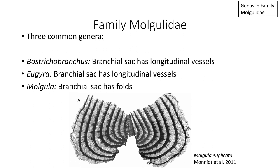In the Family Mogulidae, there are three common genera: Bostrichobranchus, Eugyra, and Mogula. The way to tell the difference is to start with understanding whether the branchial sac has longitudinal vessels or folds. Longitudinal vessels in the branchial sac go from the oral siphon all the way down to the posterior end — they are vertical lines. Longitudinal vessels do not give the branchial sac a third dimension; when you lay the animal down flat, longitudinal vessels don't rise above that flat plane.